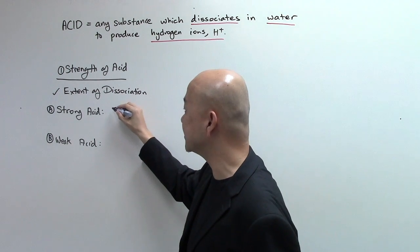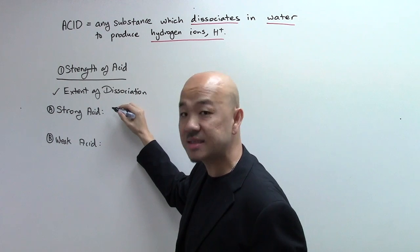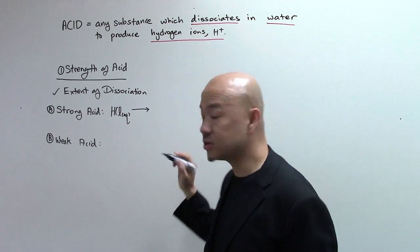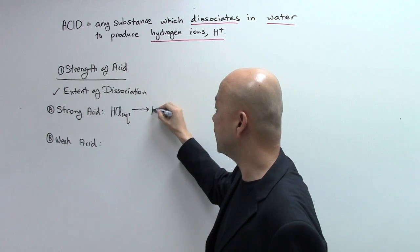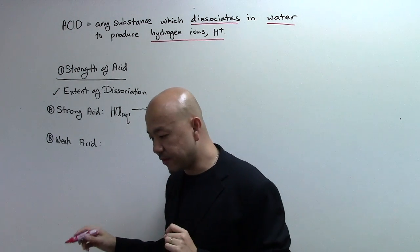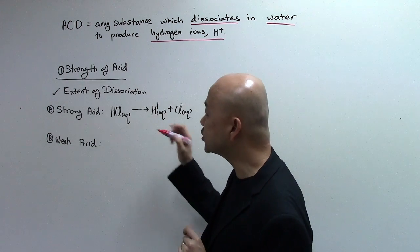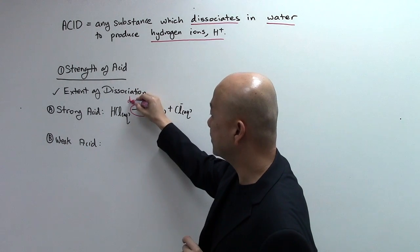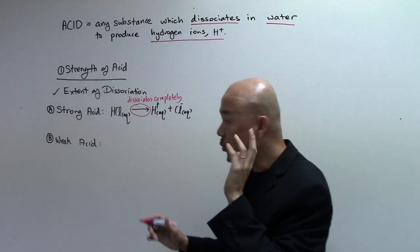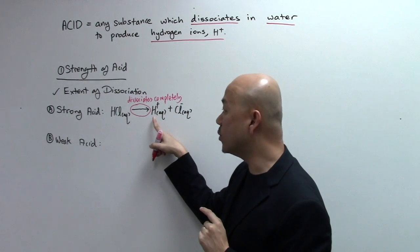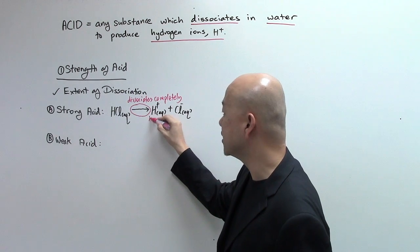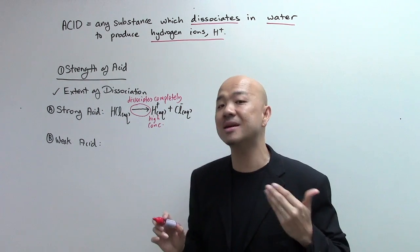A common example of a strong acid would be hydrochloric acid. Writing the dissociation equation: HCl, when it dissociates, it dissociates completely. So we use a single full arrow. It forms H-plus ions and Cl-minus ions. A strong acid uses this single arrow and dissociates completely in water to produce H-plus ions. Every one mole of HCl produces one mole of H-plus ions, meaning we get a high concentration of H-plus ions.